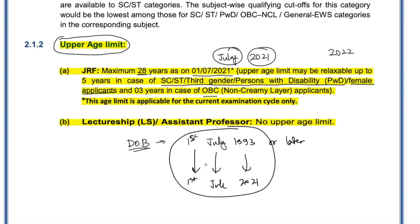For lecturership or assistant professor, there is no upper age limit — whatever age you are, you can apply and compete for that.